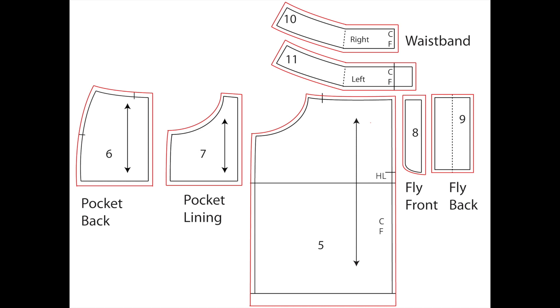The fly front number 8 has only 0.5 seam allowance around the curved edge which is overlocked. The waistband 11 has the extension which will connect to the fly back. Whereas pattern piece number 10 stops at the centre front.